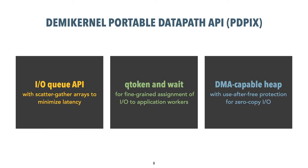DemiKernel implements a new portable datapath API named PDPIX. PDPIX aims to minimize changes to POSIX while fixing well-known issues that would cause performance problems for microsecond-scale applications. For example, instead of a pipe-based socket interface, PDPIX uses a queue that takes scatter-gather arrays. This eliminates the latency overhead from waiting for the app to potentially share more data before sending the I/O. The queue interface is inherently asynchronous and returns a queue token for each I/O operation, letting the datapath OS directly assign I/O completions to application workers. DemiKernel also lets applications perform zero-copy I/O from their own memory, so applications can use pointers in queue operations. To simplify coordination around zero-copy I/O, DemiKernel offers use-after-free protection to ensure applications don't accidentally free memory that the datapath OS might be using for I/O.